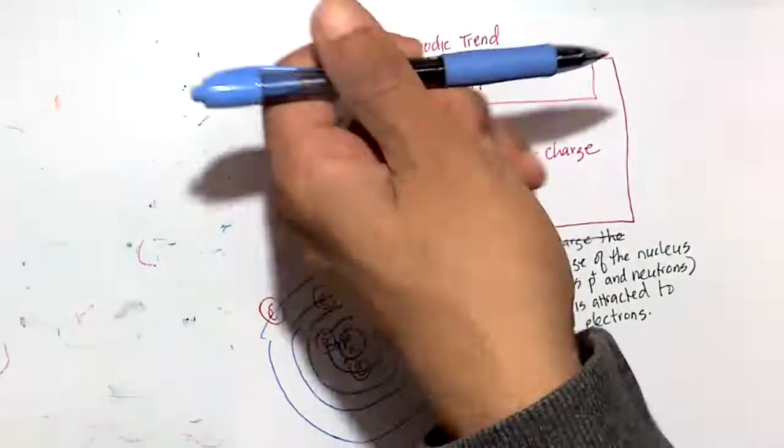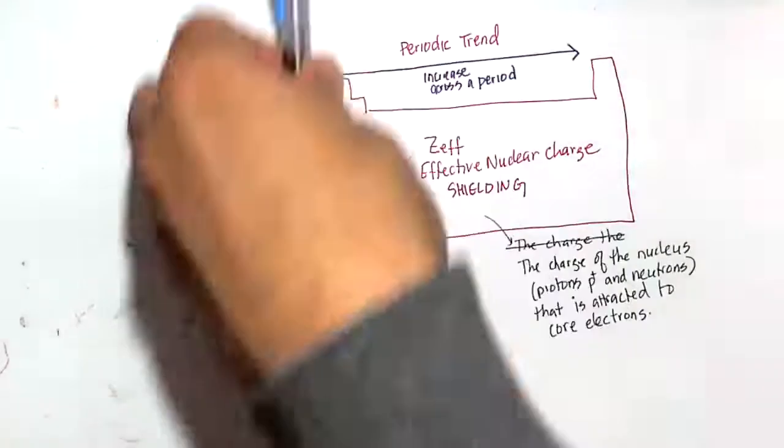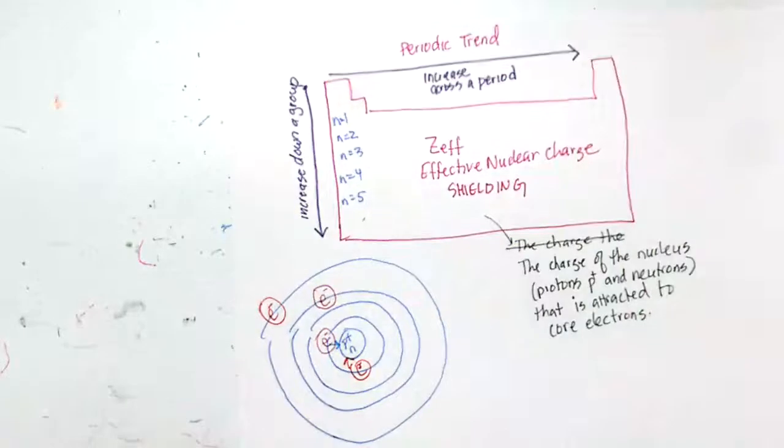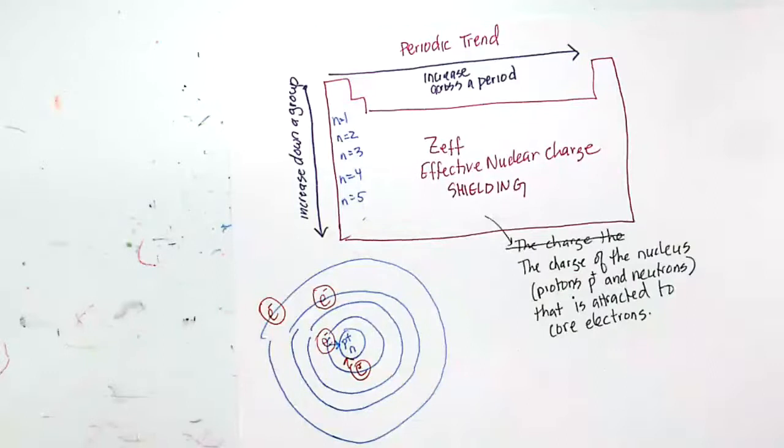This is the trend I want you to know. Effective nuclear charge increases across a row, we call that a period, and it increases down a column, we call that a group. We have a couple more to do on Tuesday. I'll wrap this chapter up on Tuesday. Thursday we'll start Lewis structures and take your exam. Tuesday you'll also have a lab.